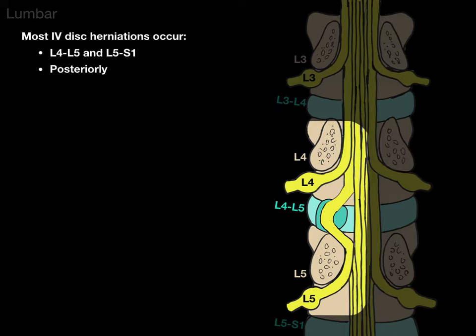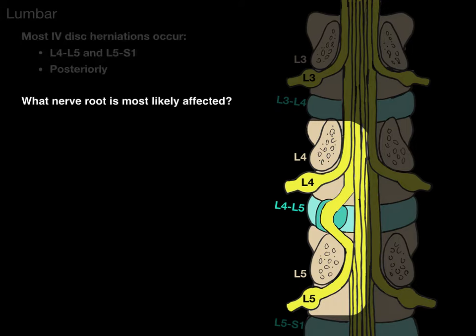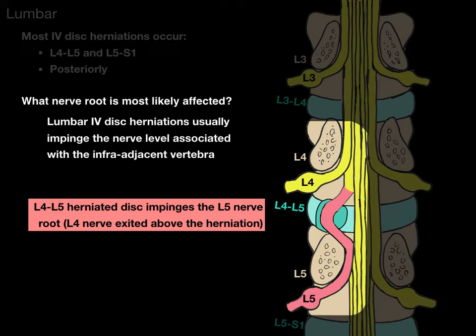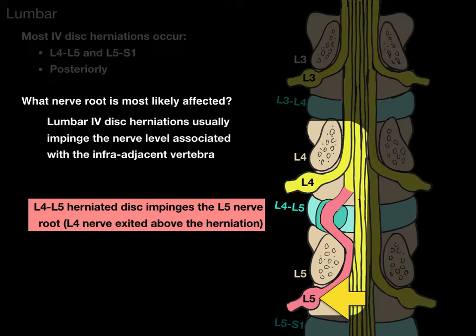Watch that herniation — that disc is going posteriorly, you see that? What nerve root is most likely affected? The answer is: lumbar intervertebral disc herniations usually impinge the nerve level associated with the infra-adjacent vertebra. So an L4-L5 herniated disc impinges the L5 nerve root, because the L4 nerve root exited above the herniation. There's L4 coursing in that neuroforamen above the herniation, which is pushing on the L5 nerve root.